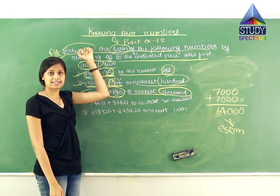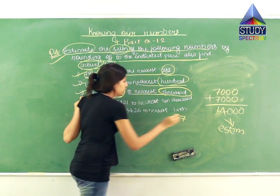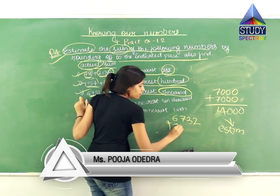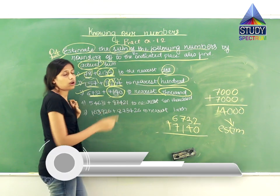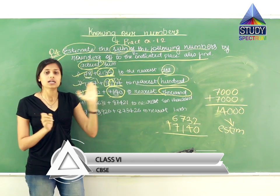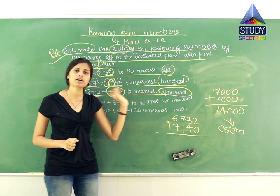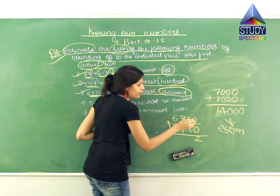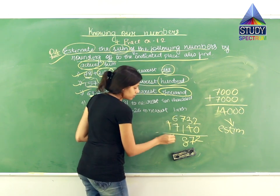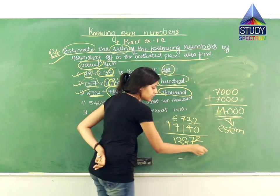For the actual sum, we add 6732 plus 7140 without any changes. 2 plus 0 is 2; 3 plus 4 is 7; 7 plus 1 is 8; 6 plus 6 is 12, plus carry 1 is 13. So the actual answer is 13872. You can see the difference: estimated is 14000 and actual is 13872.